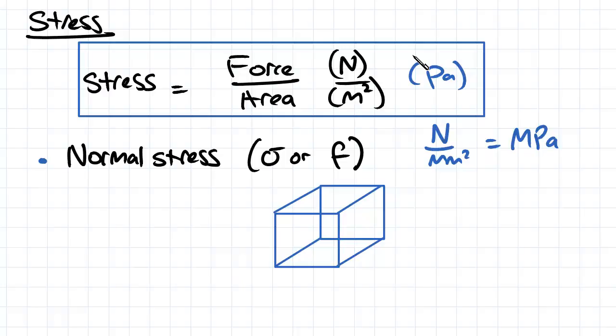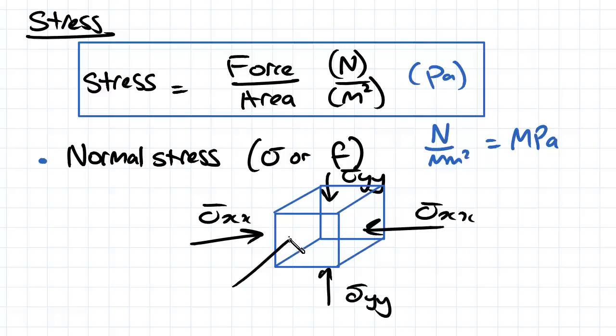They're normally drawn complementary. So we might have our sigma xx, sigma xx, actually normal to the plane, sigma yy, sigma yy, and sigma zz, and sigma zz.